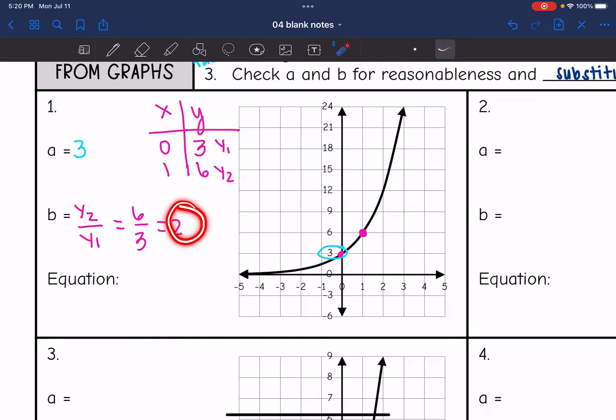This would be a growth rate since it's bigger than 1, which makes sense since our function is growing. So now I have a and b, so I can write my equation. It would be y equals 3 times 2 to the x.